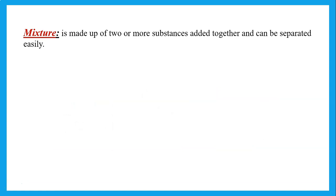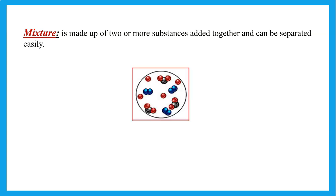A mixture is two or more substances added together — they could be elements or compounds. They can be separated easily, or we say they can be separated by simple physical means. If different types of atoms are just added together and not chemically combined, that is a mixture. Notice that a mixture can contain elements and compounds, or different types of elements added together.